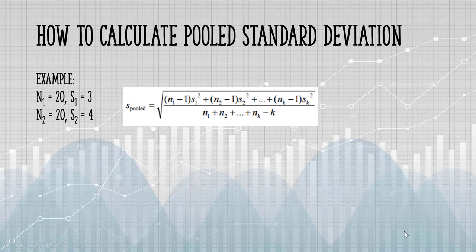Let's take a look at an example. Our sample data here has two samples. Sample 1 has 20 items, and sample 2 also has 20.